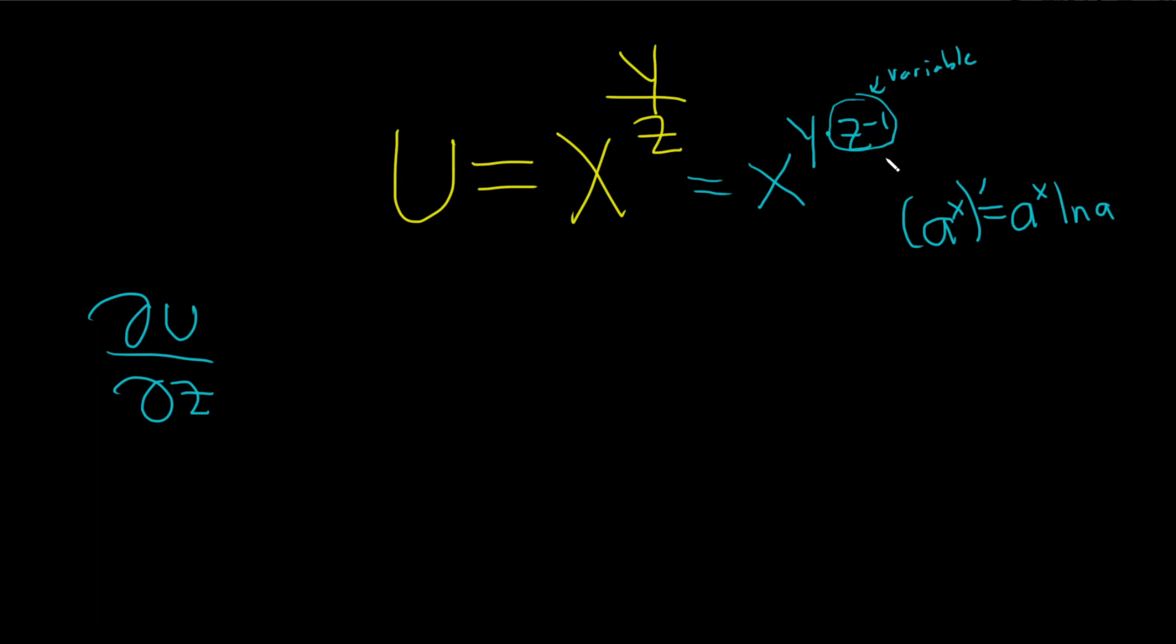So here, this is what we have. Instead of a, it's x. So this is our constant. If we take the derivative, it'll be x to the y times z to the negative 1, and then ln x, and then times the derivative of the inside.